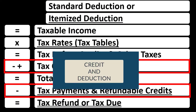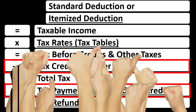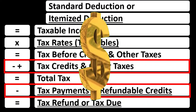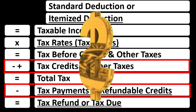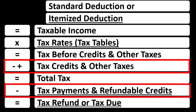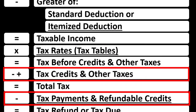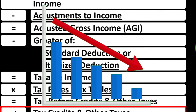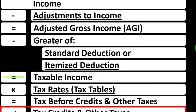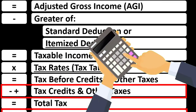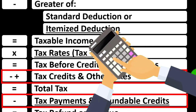Both credits and deductions are beneficial, but if you had a dollar credit versus a dollar deduction, the credit would generally be better because you get the full dollar's worth of the credit. A dollar of deduction, by contrast, only decreases your taxable income, and the tax is then calculated on that reduced amount.